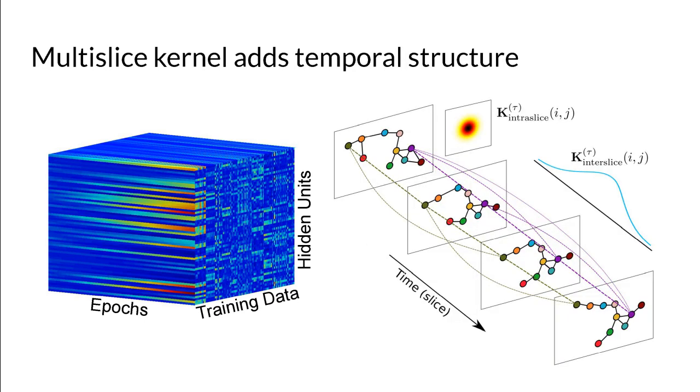So instead, we use the natural tensor structure of the data to build what we call a multi-slice graph, a graph for each epoch connected by an inter-slice kernel function.